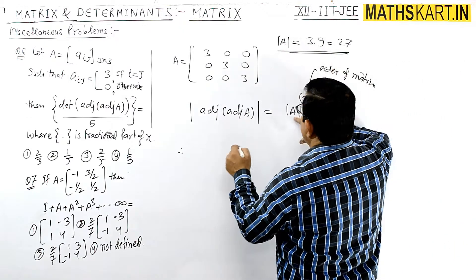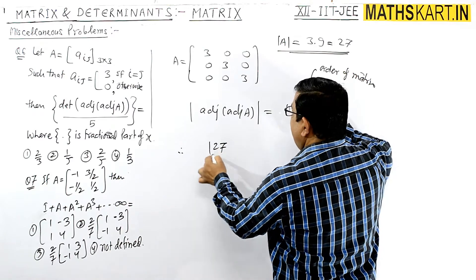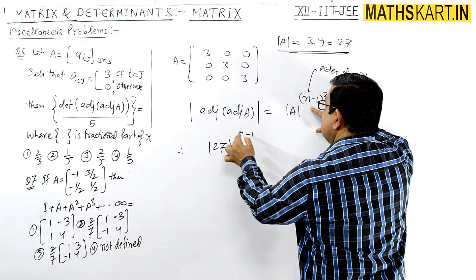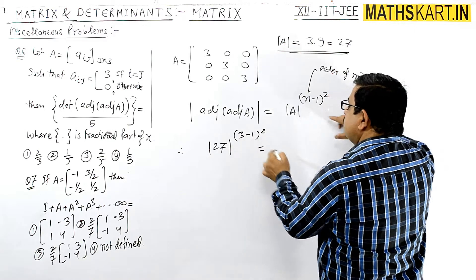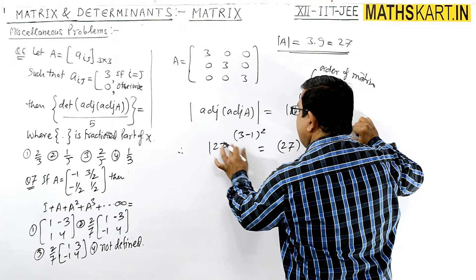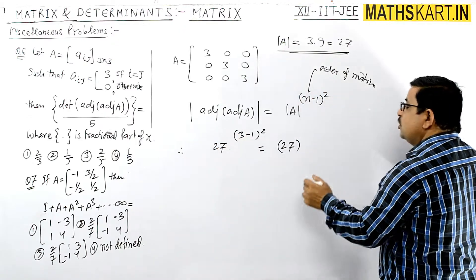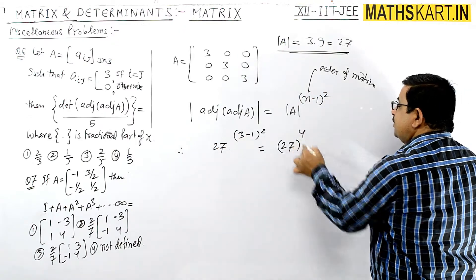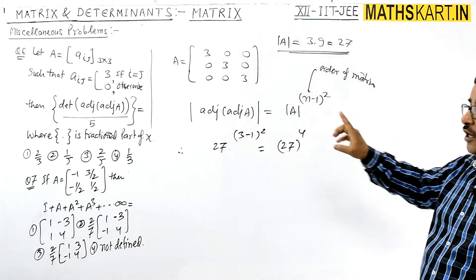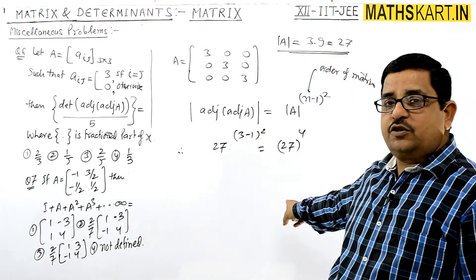So this value is 27 to the power (n−1) whole squared, which is 27 to the power (3−1) whole squared, that is 27 to the power 4. So the determinant of adjoint of adjoint of A equals 27 to the power 4.